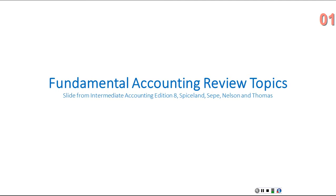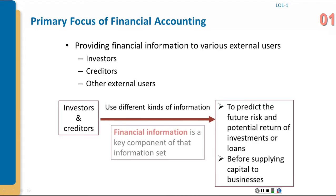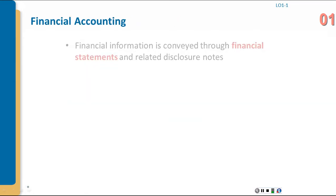The primary focus for financial accounting — which is what you are doing in this intermediate class — is to provide financial information to external users such as investors and creditors. These people need different kinds of information to assess the risk and possible return on their investment. The financial information we provide enables them to make their decisions. So we provide financial information to external users who then use that to make decisions.